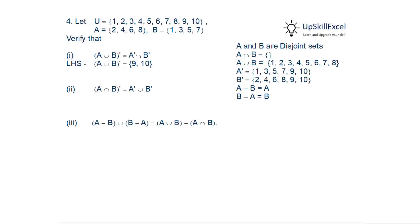Now we validate the identities. For A union B complement: A union B is {1 to 8}, so its complement is {9,10}. For A complement intersection B complement, we see only 9 and 10 are common. Therefore LHS equals RHS and the first identity is validated.